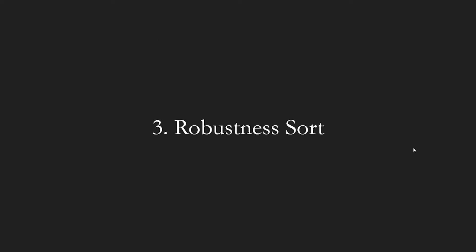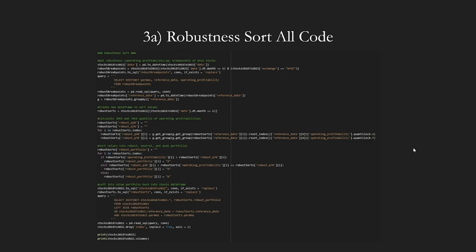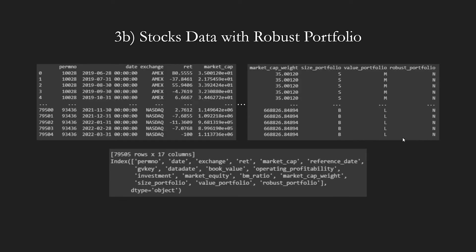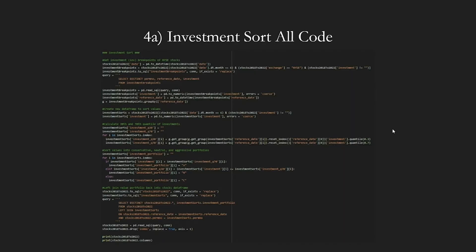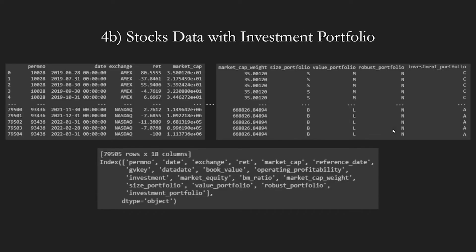The size sort and value sort code remains exactly the same. The returns should also be similar, with the two new columns included being the difference. After the size and value sorts, we insert a new code block for sorting by robustness. The code for the robustness sort is shown here — the only difference from the value sort block is different variable names and portfolio names; otherwise they function the same way. We then add another new code block to sort by investment, which is very similar to the value and robustness sorts.